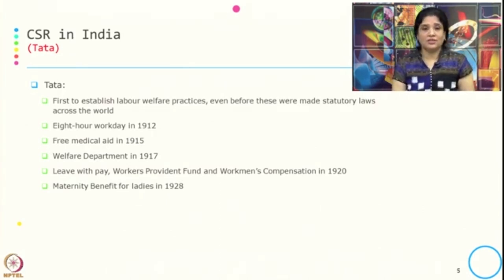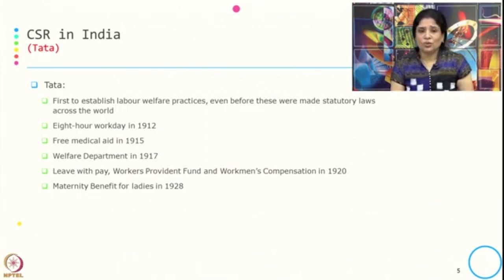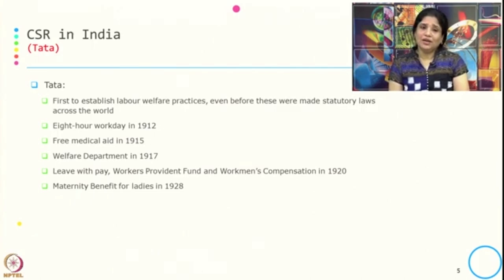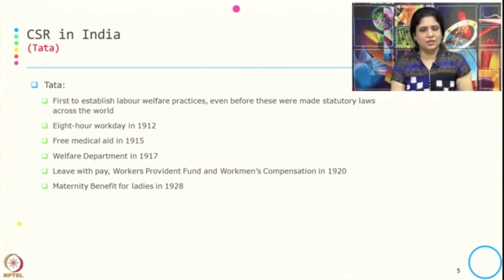Tata was the first to establish labor welfare practices even before these were made statutory laws across the world. They introduced the 8-hour workday in 1912, free medical aid started in 1915, welfare department in 1917, and leave with pay, worker provident fund, and worksmen compensation in 1920, and maternity benefit for ladies in 1920. This information is adopted from internet sources on the history of CSR in India.